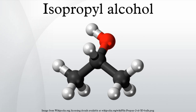Unlike ethanol or methanol, isopropyl alcohol can be separated from aqueous solutions by adding a salt such as sodium chloride, sodium sulfate, or any of several other inorganic salts, since the alcohol is much less soluble in saline solutions than in salt-free water. The process is colloquially called salting out, and causes concentrated isopropyl alcohol to separate into a distinct layer.